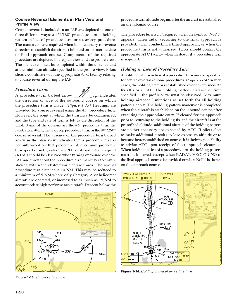Holding in lieu of procedure turn: a holding pattern in lieu of a procedure turn may be specified for course reversal in some procedures. In such cases, the holding pattern is established over an intermediate fix, IF, or a FAF. The holding pattern distance or time specified in the profile view must be observed. Maximum holding airspeed limitations apply. The holding pattern maneuver is completed when the aircraft is established on the inbound course after executing the appropriate entry. If cleared for the approach prior to returning to the holding fix and the aircraft is at the prescribed altitude, additional circuits of the holding pattern are neither necessary nor expected by ATC. When holding in lieu of a procedure turn, the holding pattern must be followed, except when radar vectoring to the final approach course is provided or when no-PT is shown.